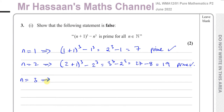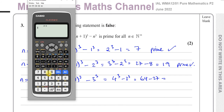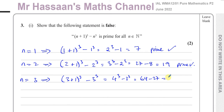When n equals 3, we're going to have (3+1)³ minus 3³, so that's 4³ minus 3³, which is 64 minus 27, which gives us 37. 37 is a prime number — 2, 3, 5, 7 don't go into it — so that hasn't proved our statement false yet.